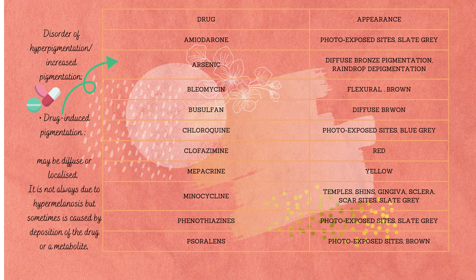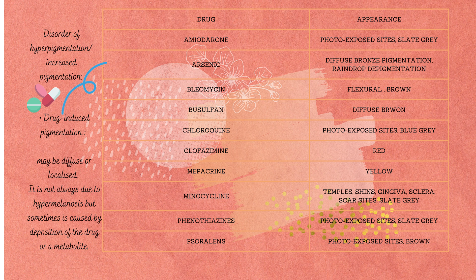Different drugs show different pigmentation patterns. Amiodarone causes photo-exposed site pigmentation with a slate-gray appearance. Arsenic causes diffuse bronze pigmentation. Bleomycin causes flagellate brown streaks. Busulfan causes diffuse brown. Chloroquine affects photo-exposed sites with a blue-gray appearance. Clofazimine causes red. Mepacrine causes yellow. Minocycline affects temple shins, gingival, and scleral sites with slate-gray discoloration. Phenothiazines affect photo-exposed sites with slate-gray appearance.